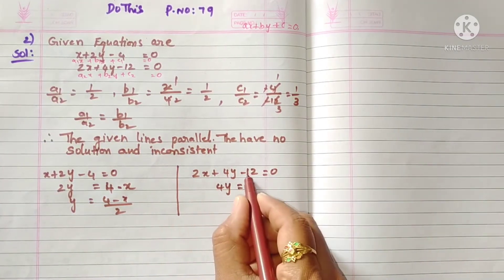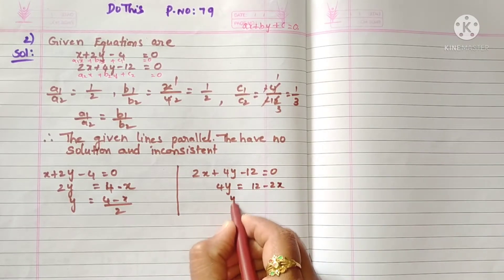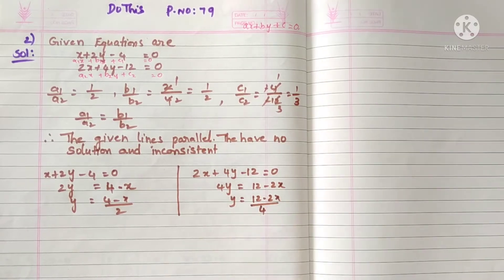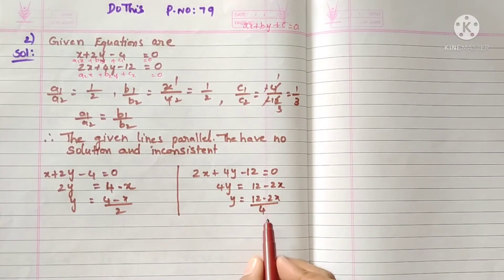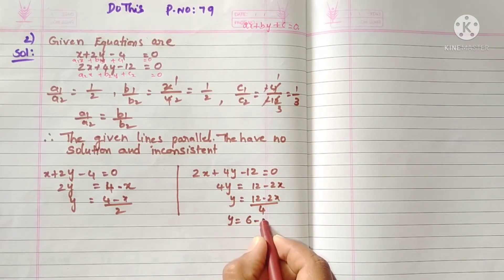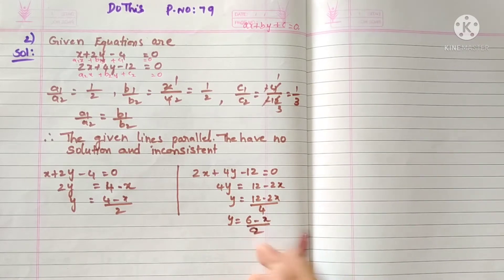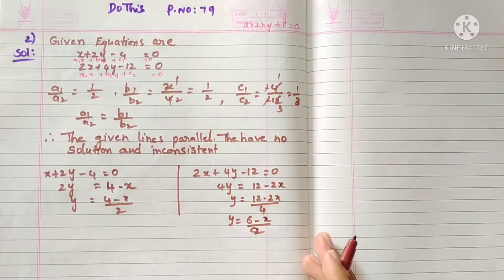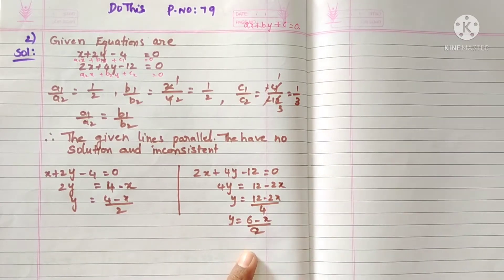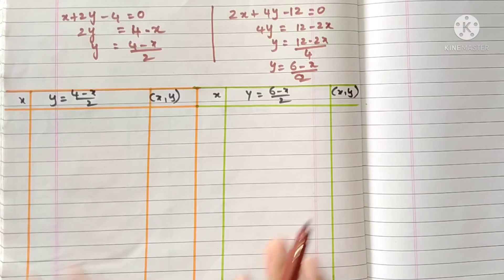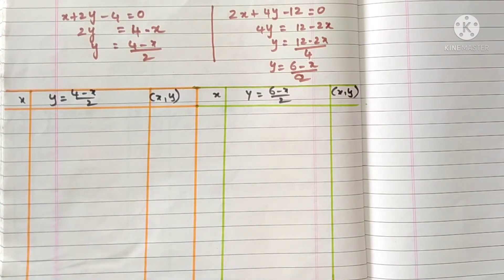Then y equals 12 minus 2x by 4. We can cancel by 2 to simplify, giving y equals 6 minus x by 2. Simplifying makes calculations easier. In the denominator 2 is there, so choose even numbers for x so the numerator divides evenly.